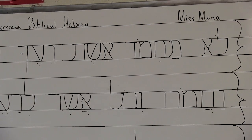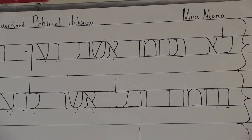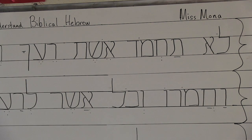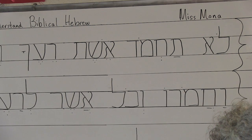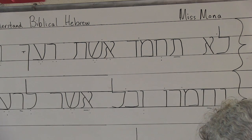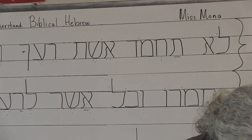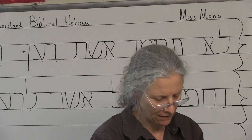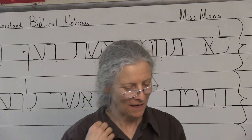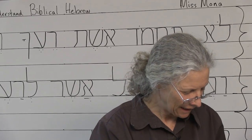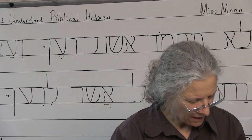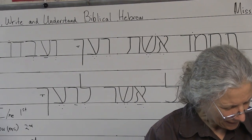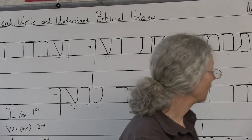So we're going to read until you're done here, and then we'll add some more. Go ahead — we're going to read just from this whole line here, and then on the line paper we're going to add stuff and finish the verse. So start reading together: Lo tach-mod beit re-e-cha.